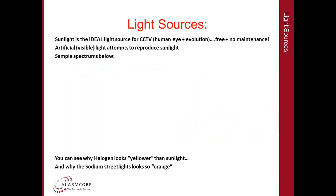Light sources. Sunlight is the ideal light source for CCTV, because CCTV has traditionally attempted to see things the way the human eye sees things, and the human eye has had millions of years to evolve to work with sunlight. Sunlight is also ideal because it is absolutely free and there is no maintenance required. Artificial visible light attempts to reproduce sunlight, but some light sources do this better than others.